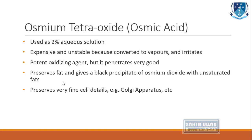Osmium tetroxide is used as a 2% aqueous solution. It is one of the most expensive and unstable fixatives, as it rapidly converts into vapors which are very irritating. It is an important oxidizing agent and penetrates well into tissue slices. Its advantages are that it preserves fats very well and gives a black precipitate of osmium dioxide with unsaturated fats. It is useful for preserving fine cell details such as the Golgi apparatus and other organelles, making it mostly used for electron microscopy.